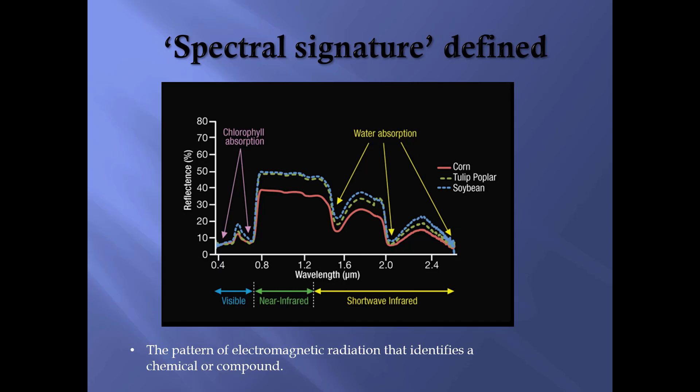This graph is much clearer and easier to read. On the x-axis, we have wavelength in micrometers, and on the y-axis, we have percent reflectance. We have portions of the visible, near-infrared, and short-wave infrared spectrum represented. Visible goes from 0.4 to approximately 0.8 micrometers, near-infrared is slightly longer, and short-wave infrared is longer than that. These three curves represent spectral signatures for corn, tulip poplar, and soybean.